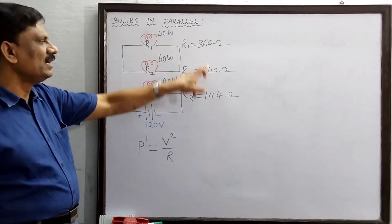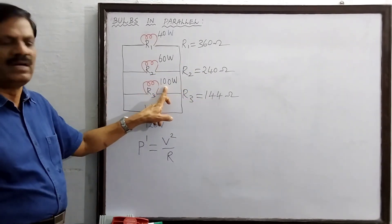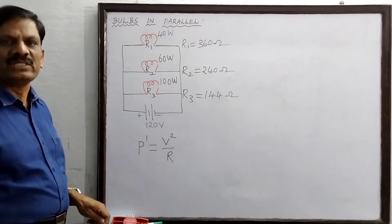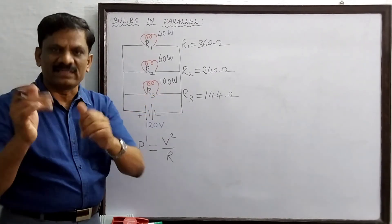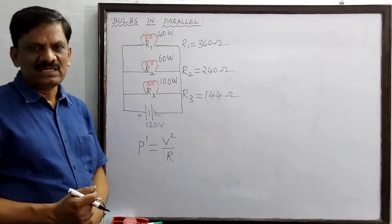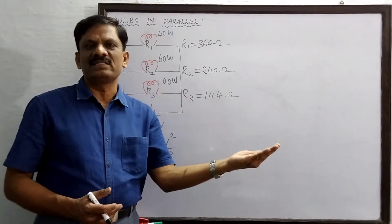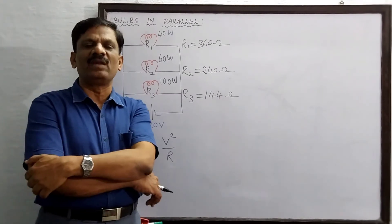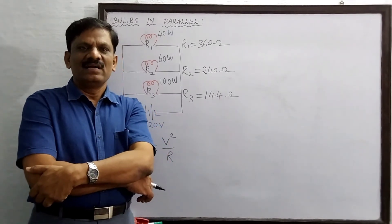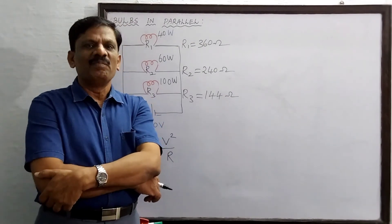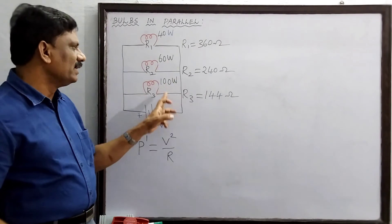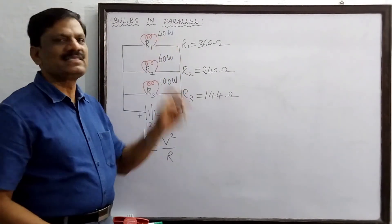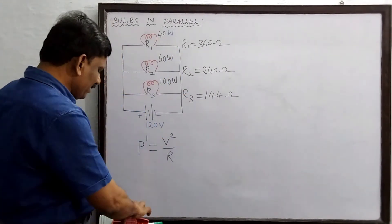The resistance of the third bulb, the 100-watt bulb, is the smallest, and since it appears in the denominator of V²/R, it dissipates the most power. In parallel combination, the 100-watt bulb will be the brightest and the 40-watt bulb will be the dimmest — the reverse of the series case. In series, the 40-watt bulb was brightest; in parallel, the 100-watt bulb is brightest.